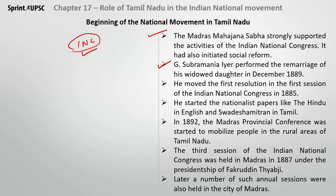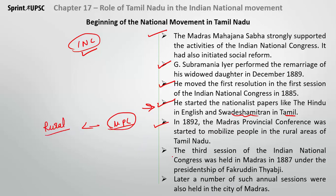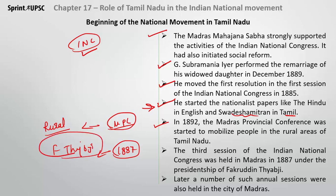G. Subramanya Iyer performed remarriages of widows. He moved the first resolution at the first session of the Indian National Congress in 1885, and also started nationalist papers — The Hindu in English, and Swadesha Mitran in Tamil. In 1892, the Madras Provincial Conference started, aiming to mobilize the rural population of Tamil Nadu. In 1887, there was an INC session in Madras, presided over by Badruddin Tyabji. The annual INC sessions were slowly being held in Madras City.